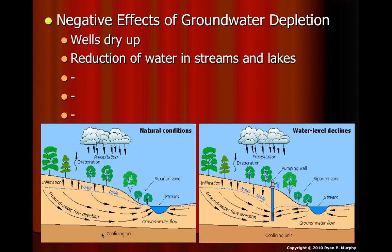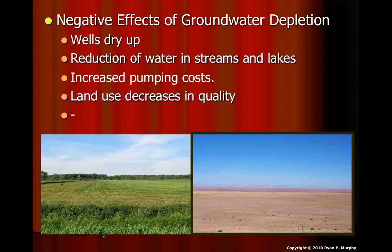Other negative effects of groundwater depletion include your well drying up, as well as streams and lakes drying up since groundwater feeds them. It costs more money if you have to pump from deeper down, and land productivity decreases because you're removing the water that crops or the land itself was using — so it becomes more desert-like.